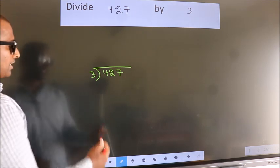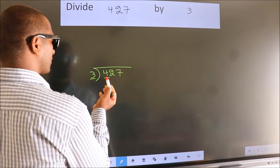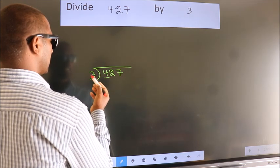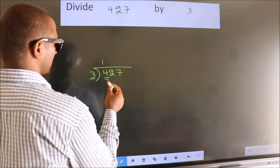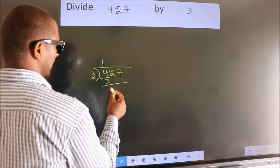Next. Here we have 4, here 3. A number close to 4 in 3 table is 3 once 3. Now we should subtract. We get 1.